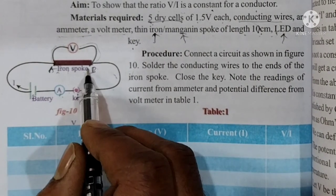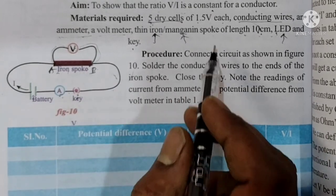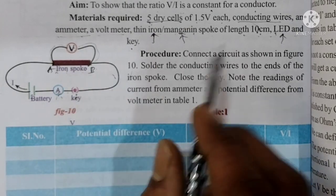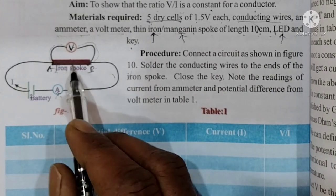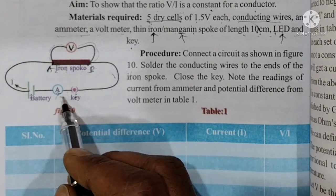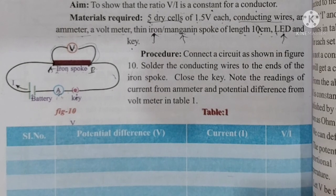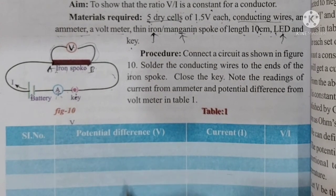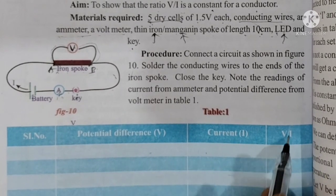If we do this experiment, we can use these readings. We use the manganin wire and then the LED bulb. In this experiment we record: serial number, potential difference, and current reading — these two readings.